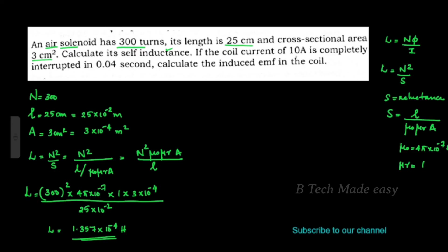For the second question: coil current i1 equals 10 Ampere, which is completely interrupted, so i2 equals 0. The change in current delta I equals i1 minus i2, which is 10 minus 0 equals 10 Ampere. Time dt equals 0.04 second.